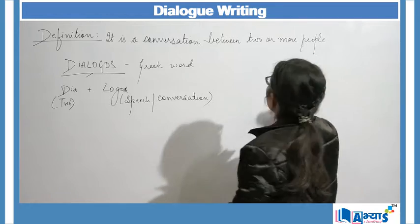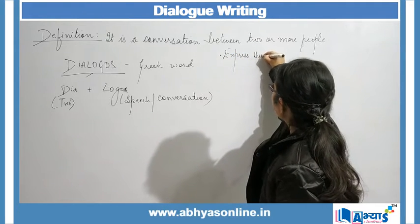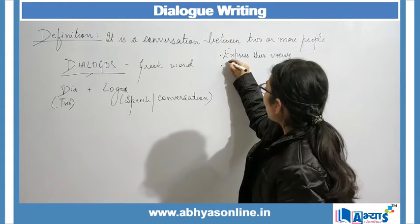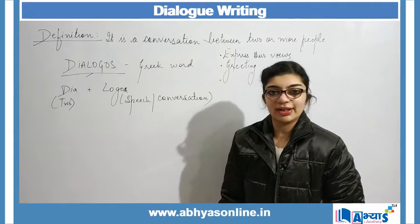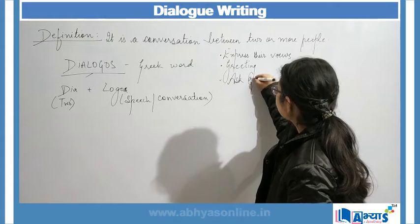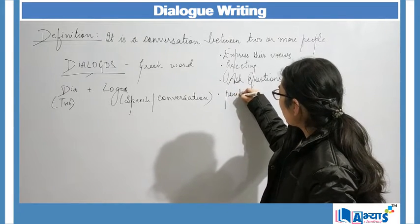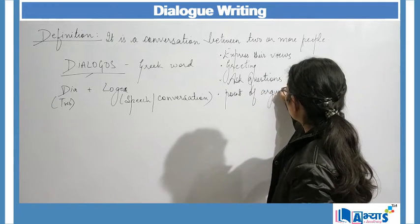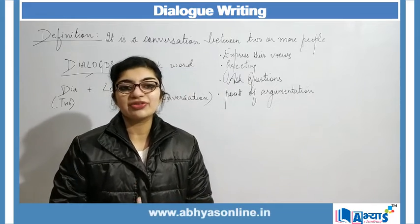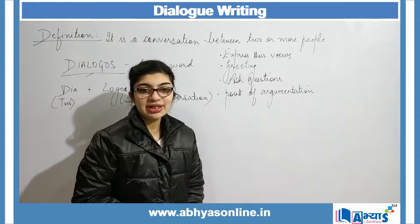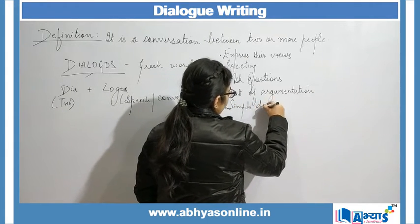In a dialogue, people can express their views, form a simple greeting, or ask questions to one another. They can also put a point of argumentation. So these are some of the ways dialogues can be exchanged — they can greet, ask questions, argue, or express their views in a simple discussion.